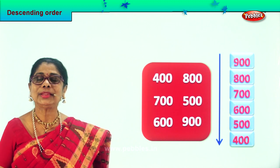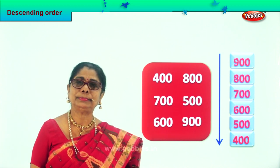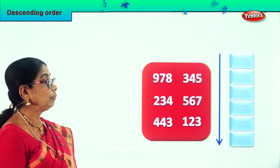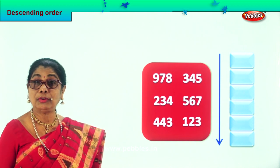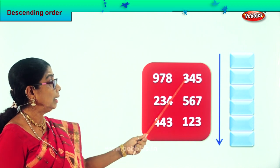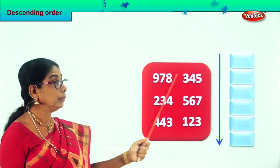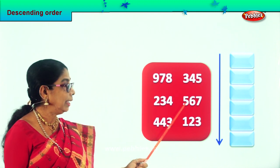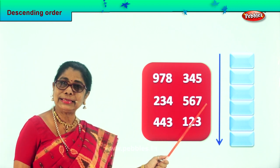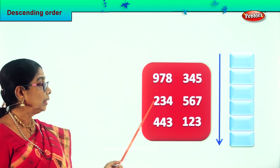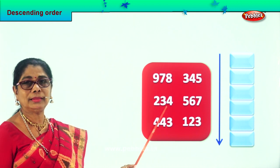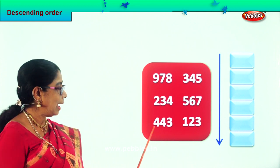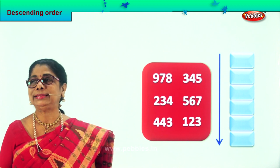Did you enjoy? Good. Let's take another sum. Look. First, read aloud the numbers. Three hundred forty-five, nine hundred seventy-eight, five hundred sixty-seven, two hundred thirty-four, one hundred twenty-three, and four hundred forty-three.